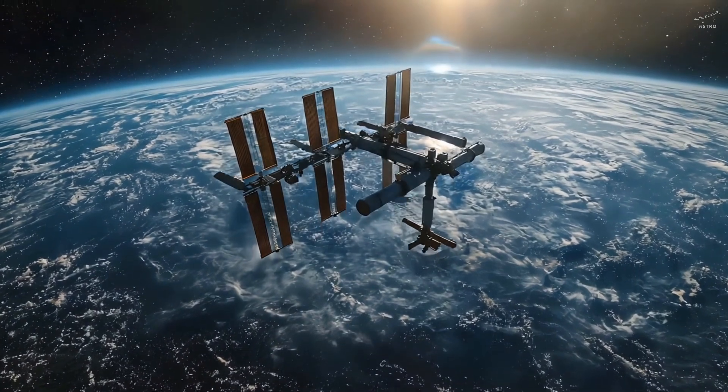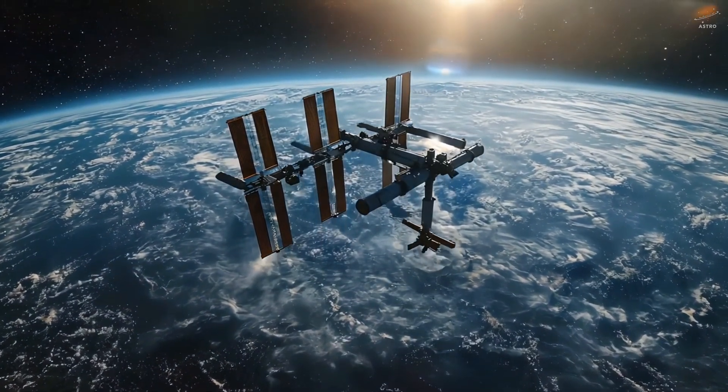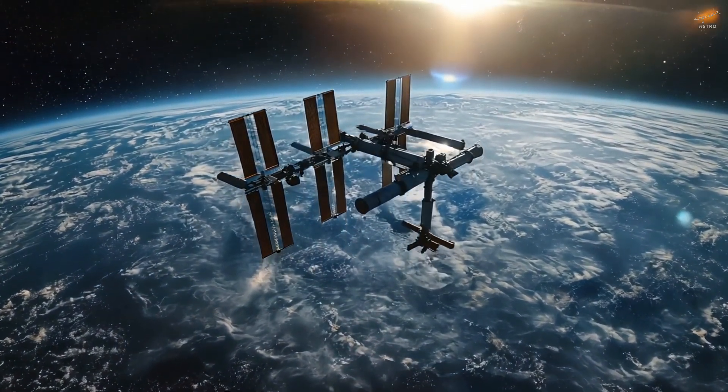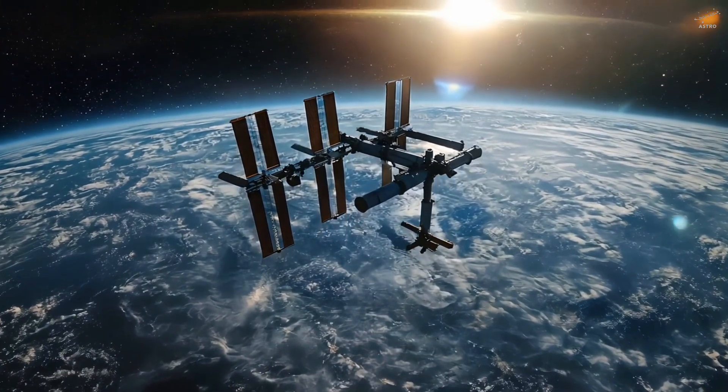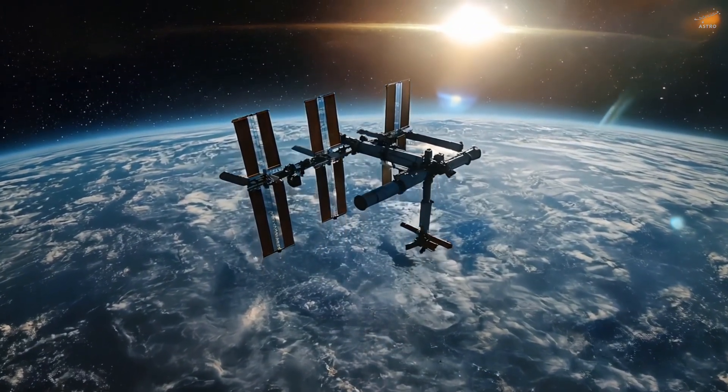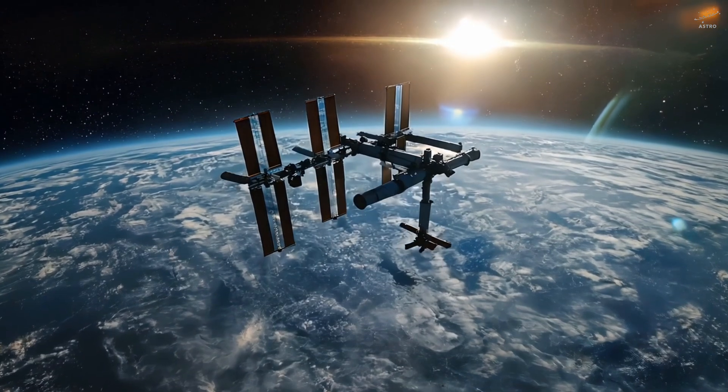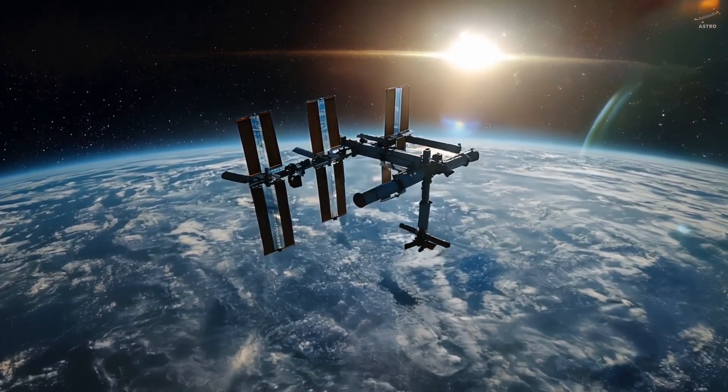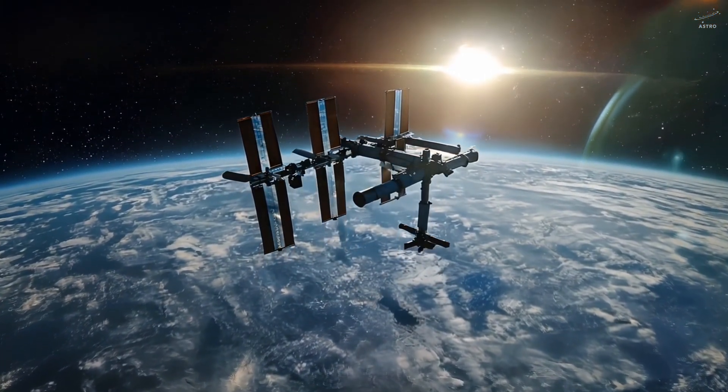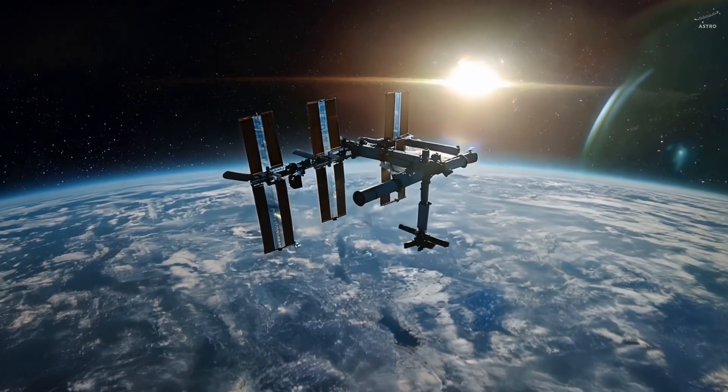About 7.9 kilometers per second. Something extraordinary happens. The cannonball never touches the ground. It keeps falling. But it keeps missing the Earth. It loops around, again and again. Falling endlessly. But never landing. This is orbit.